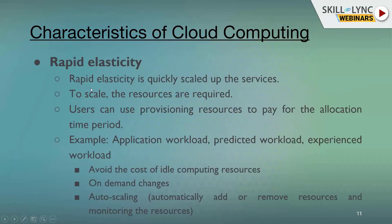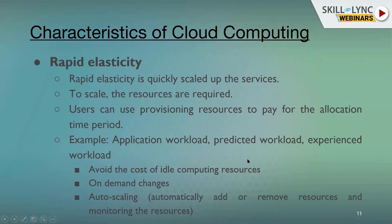Next is rapid elasticity — quickly scaling up or down services and resources as required. Users can use provisioned resources and pay for the allocation time period. This is very important: pay for the allocation time period. For example, based on application workload, peak hours, or predicted workload, we can increase the load during peak hours and reduce it otherwise, which saves cost for the company.